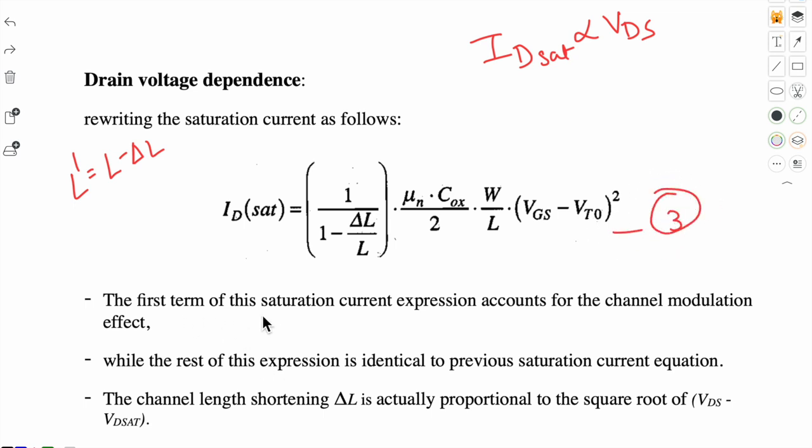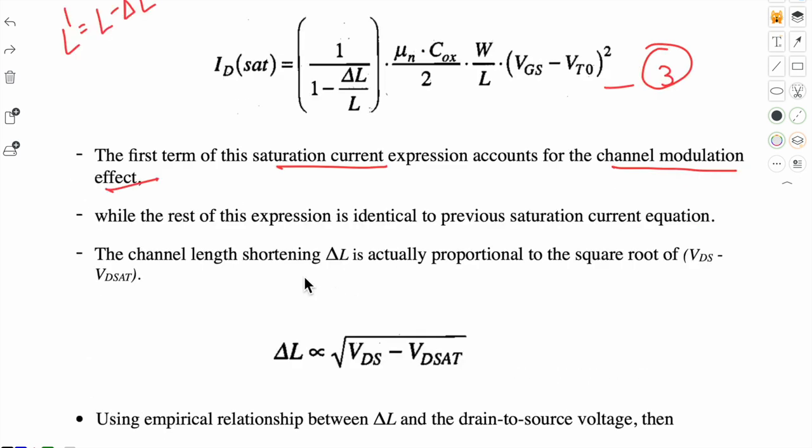Here the first term of this saturation current expression accounts for the channel modulation effect. While the rest of this expression is identical to the previous saturation current equation. So this channel length shortening delta L is actually proportional to the square root of VDS minus VDS saturation.